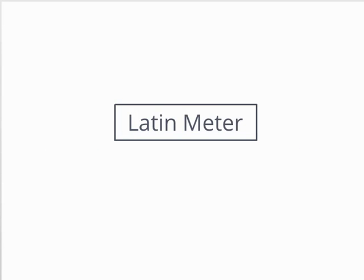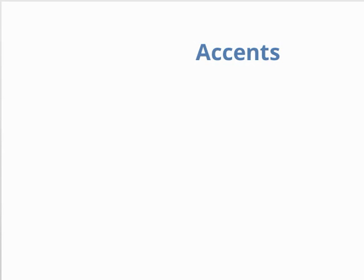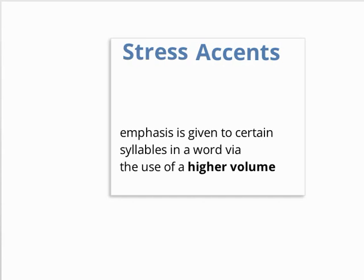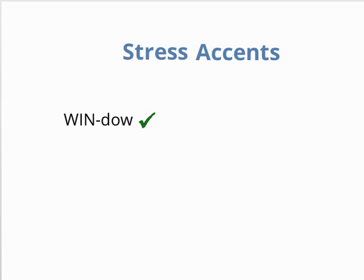There is one more important concept needed for understanding Latin meter. This concept relates to the types of accents given to words. English uses a clear stress accent — that is, emphasis is given to certain syllables in a word via a higher volume. For example, we say 'window,' not 'window.'